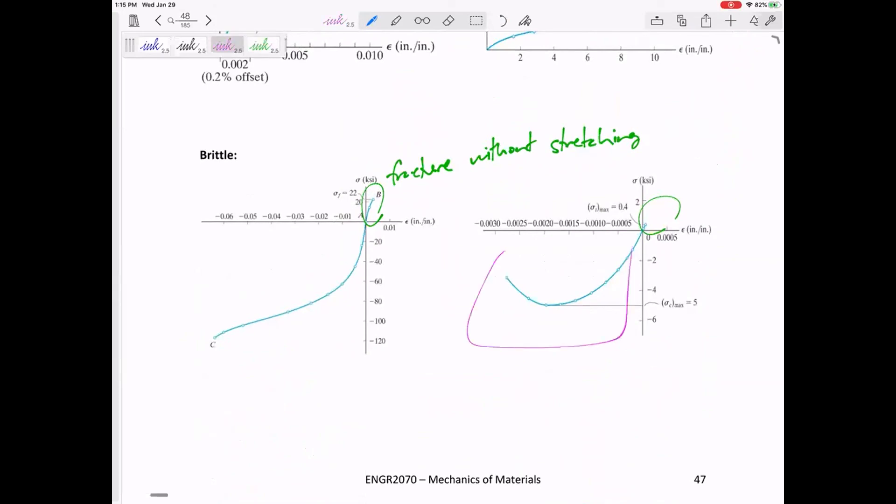So this would be our compression stress-strain curve. Notice it's very different from the tension stress-strain curve. Right? This quadrant would be tension. This quadrant would be compression.